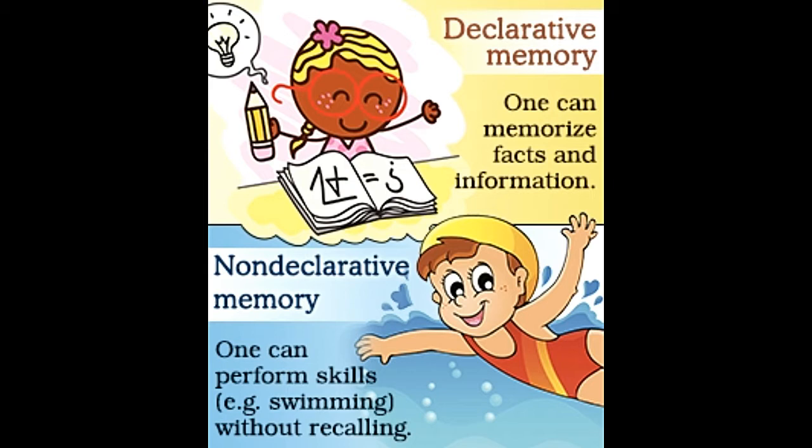What strikes the difference? Procedural memory can be altered over time — skills can be honed and made better — unlike explicit memory, which contains facts and figures that cannot be altered.